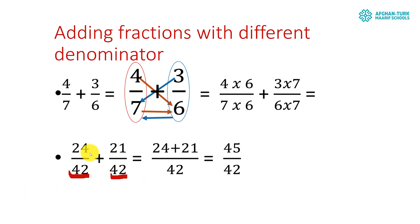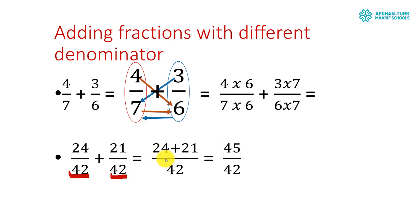Now it's easy — as with the first rule, we take one of the equal denominators and add the numerators together: 24 plus 21. You know that 4 plus 1 is 5 and 2 plus 2 is 4, so 24 plus 21 is equal to 45 over 42.